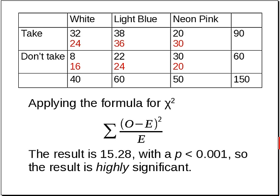If we apply the formula for chi-squared — again, going over every cell, taking the observed minus the expected, squaring it, and dividing by the expected value — the result is 15.28. When you look that up in the table with two degrees of freedom, the probability is less than one in a thousand.